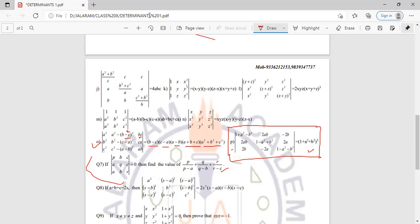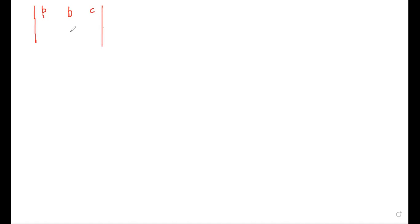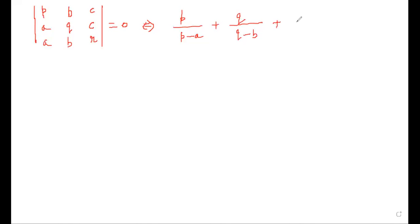So first we will write it on our page. The given determinant has first row p, b, c; second row a, q, c; third row a, b, r equals zero. And we have to find p/(p-a) + q/(q-b) + r/(r-c). We need to simplify the determinant by using properties of determinants.